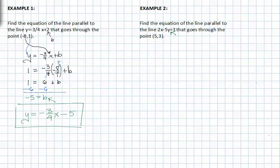So first, we must isolate y and get it in slope-intercept form. By subtracting two x from both sides, we get negative five y is equal to negative two x plus three.